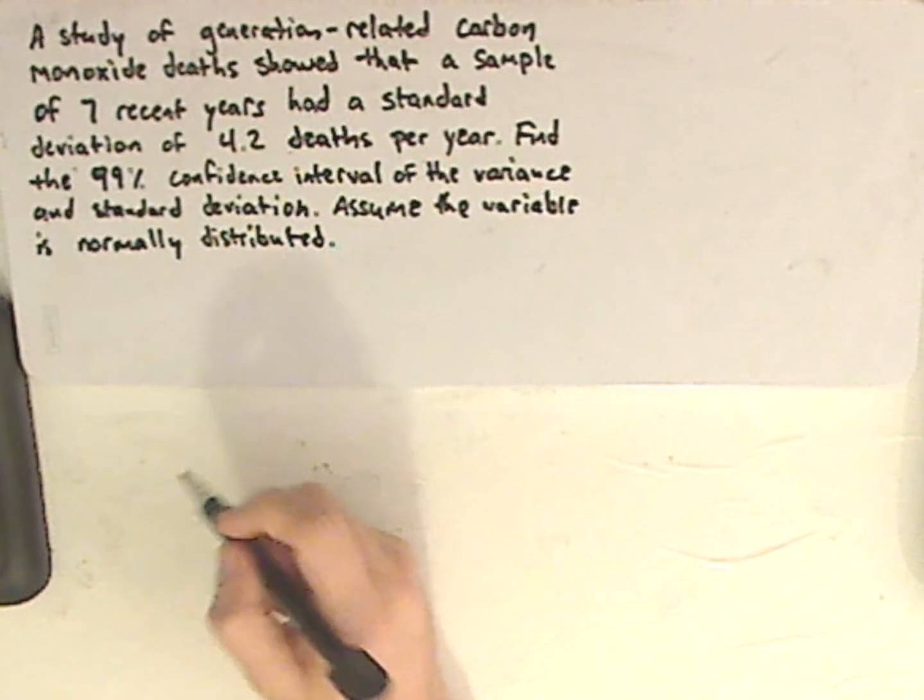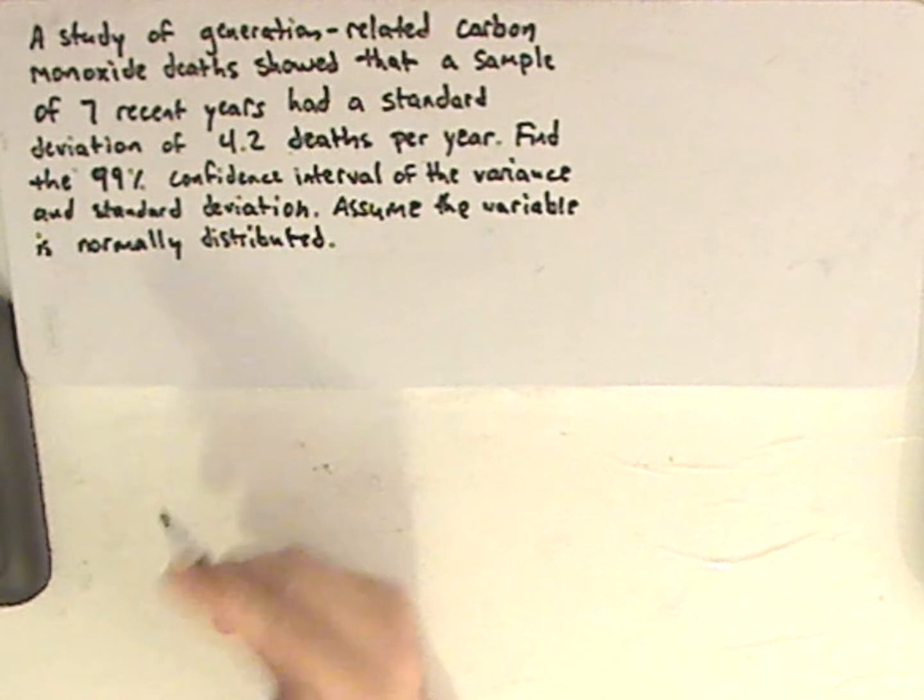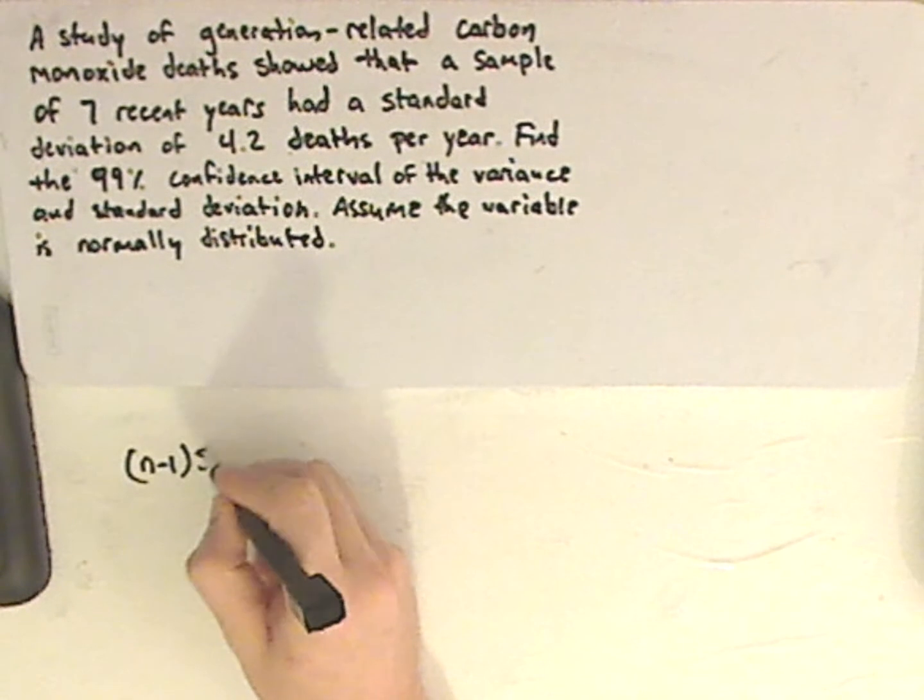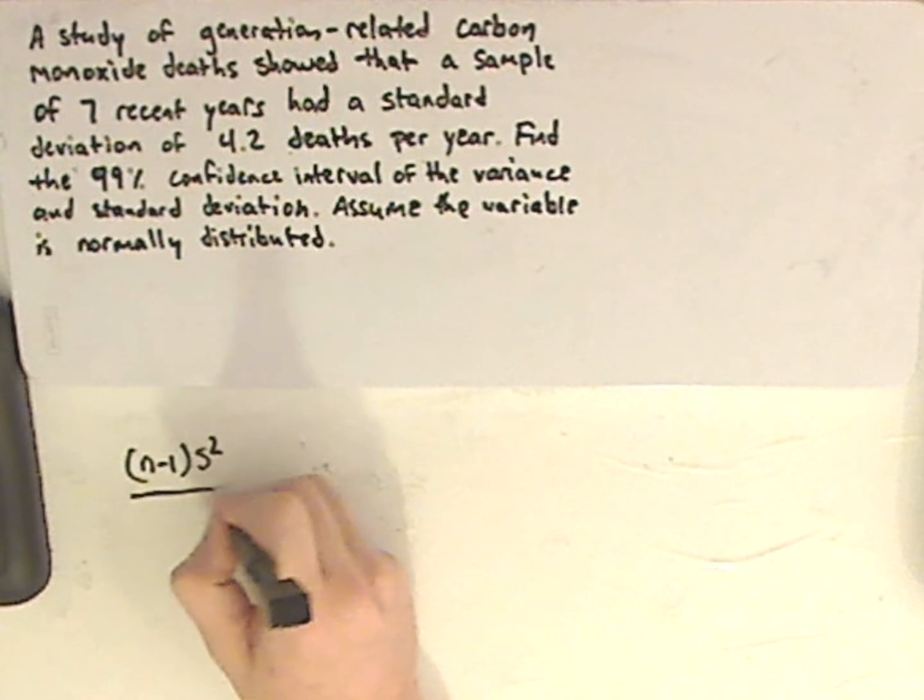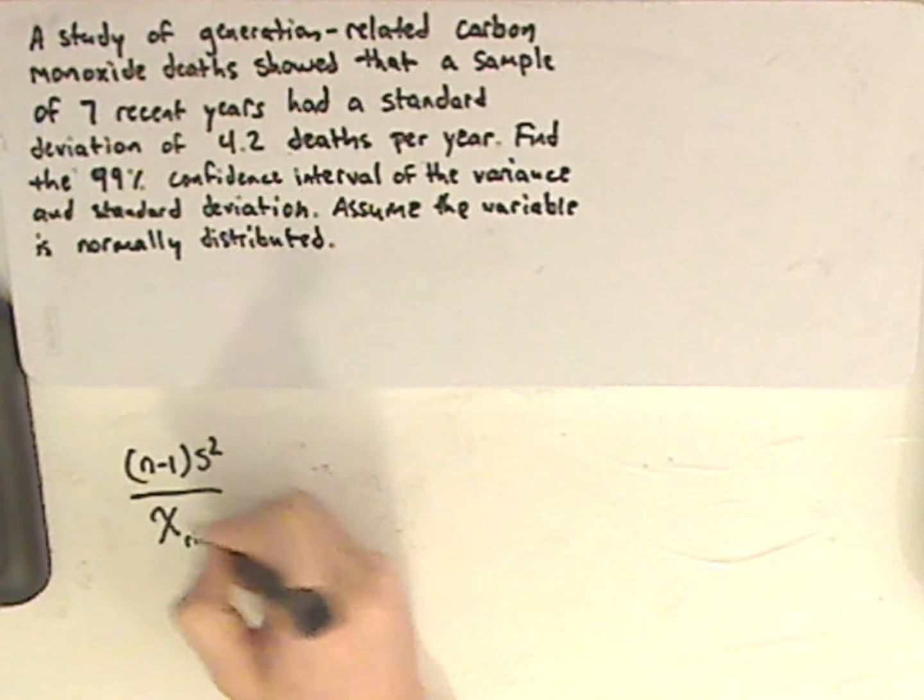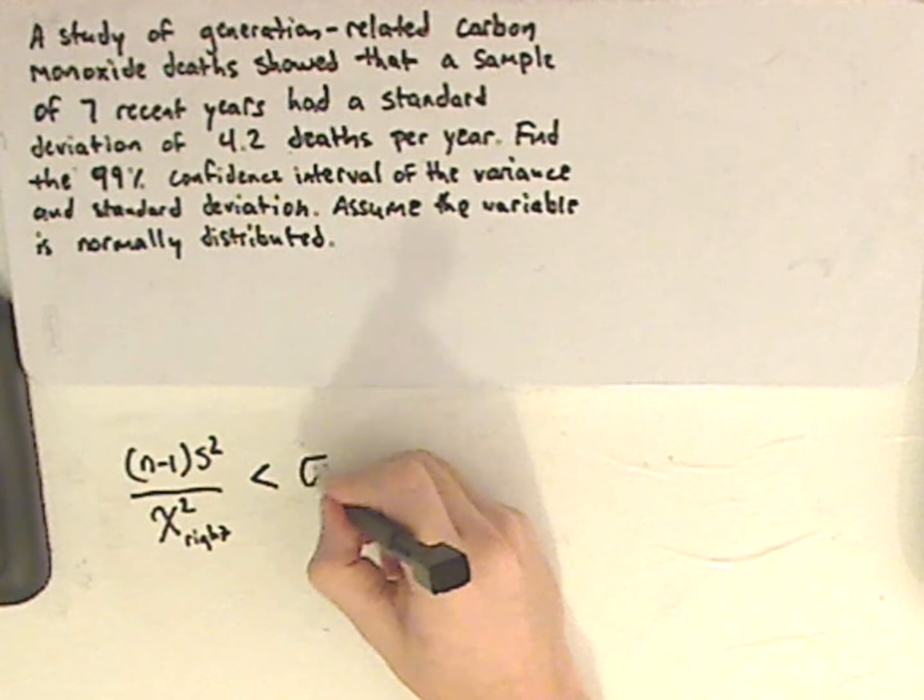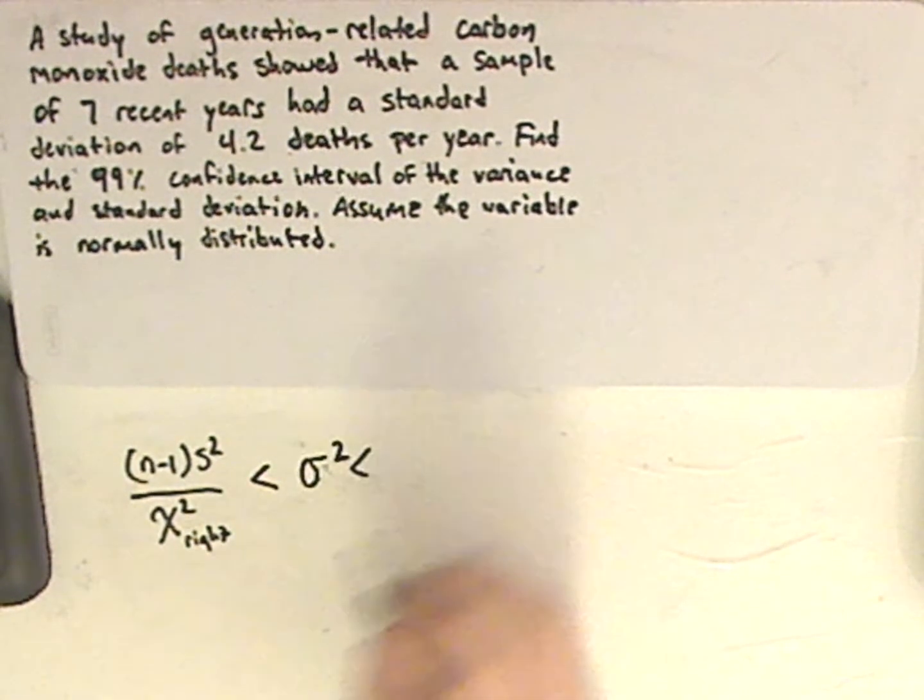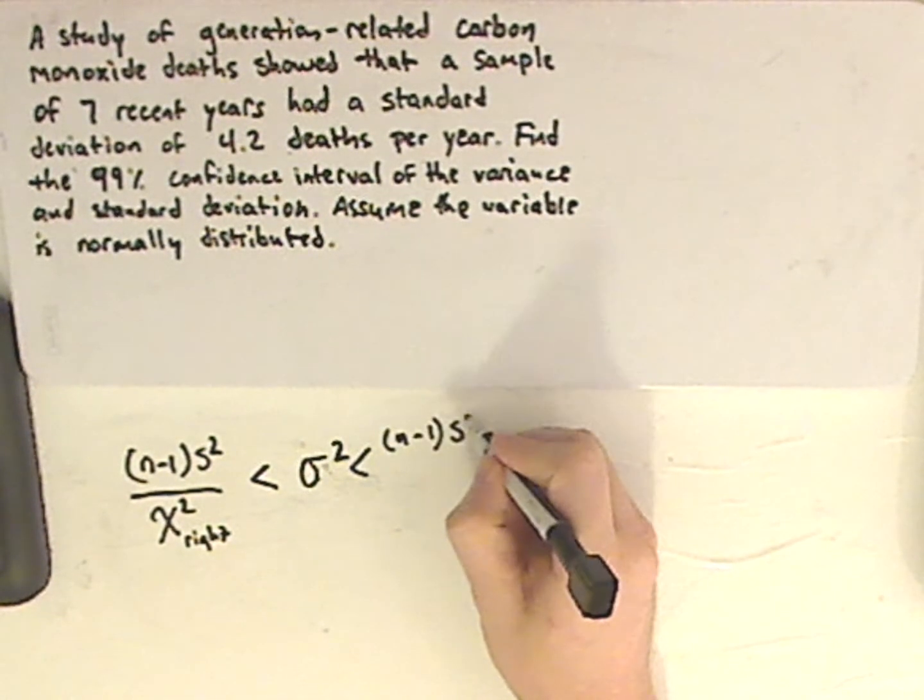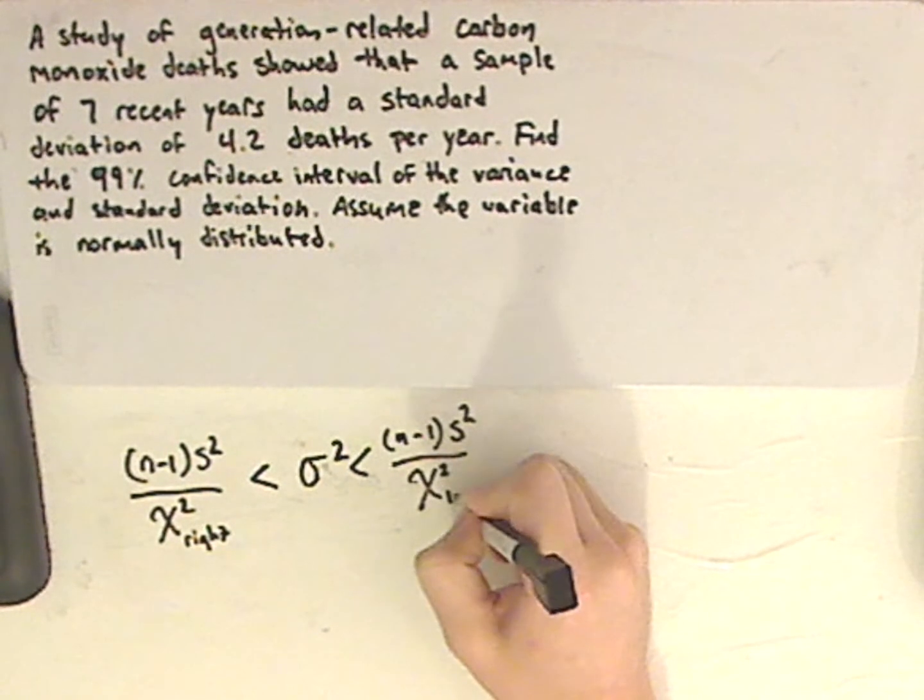so let's look at the formula. The formula for both the standard deviation and the variance are relatively the same. So it's (n-1)s² over chi squared right, less than the variance, less than (n-1)s² over chi squared left.